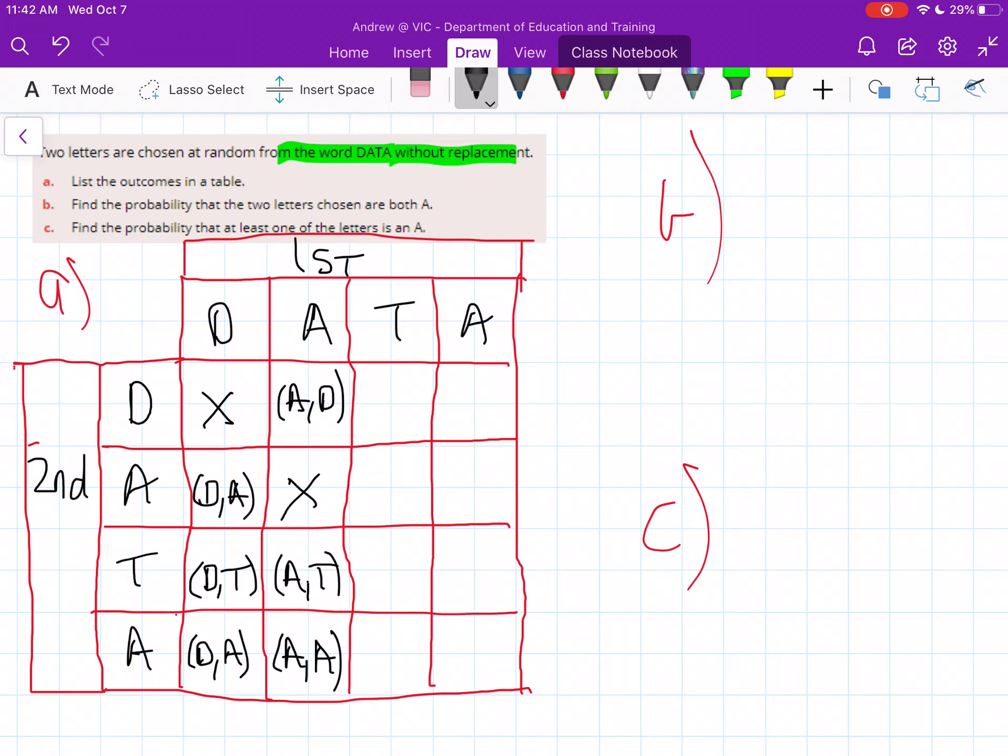So now I'll go in and fill the rest a little bit quicker. We've got T and D. Then we've got T and A. We can't have T and T. Then we've got T and A again. Then we've got A and D as our second choice. Then A and A because they're different A's. Then we've got A and T. And then we can't choose the same A again, so that one is out.